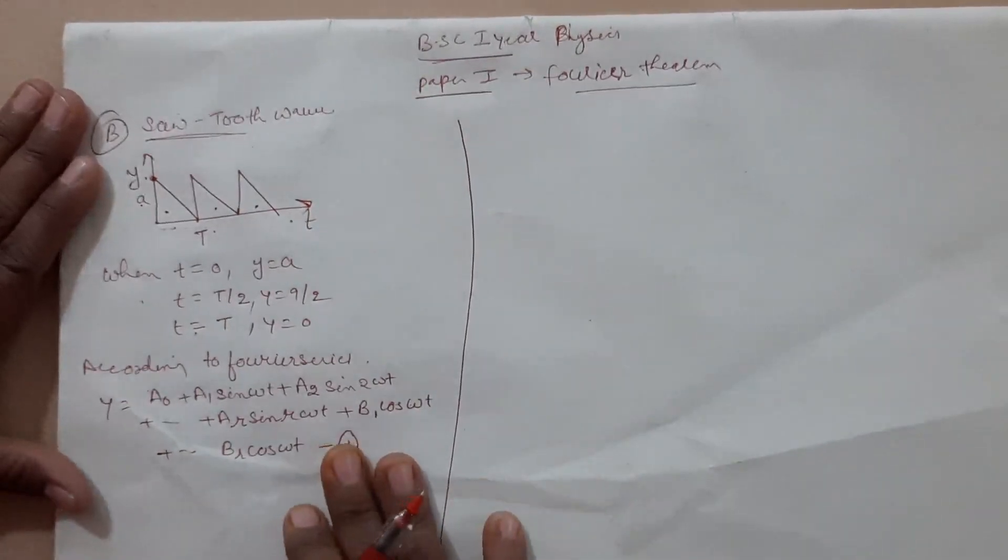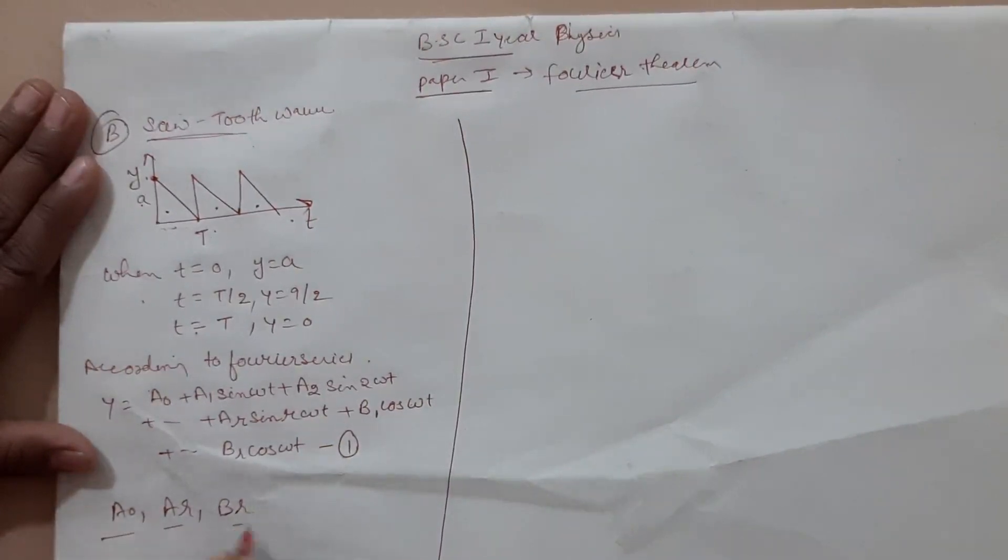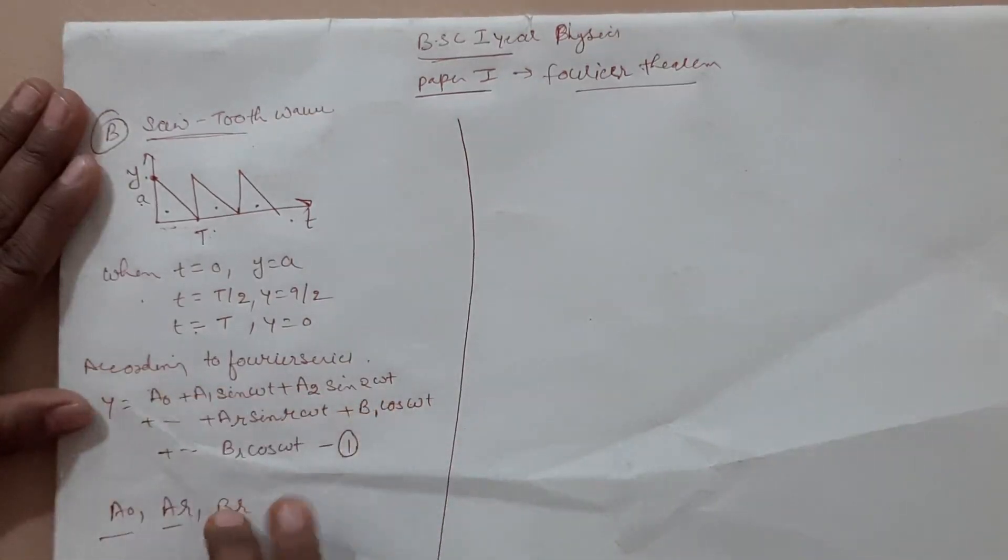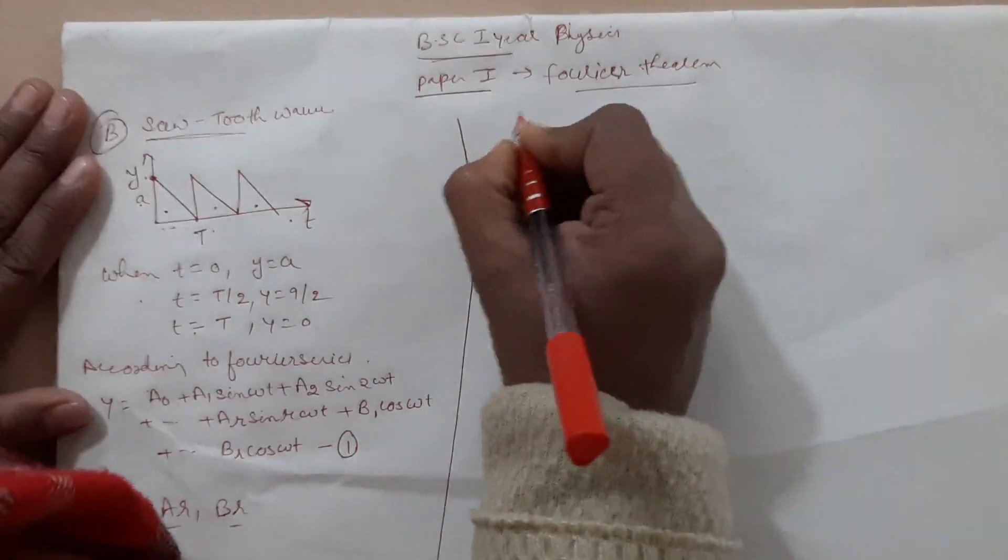This first equation we will solve. We will find a0, ar and br value. We will find it in this equation and then this value for saw tooth wave will calculate.